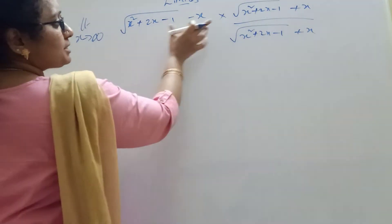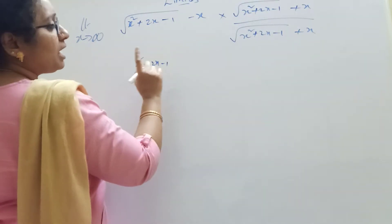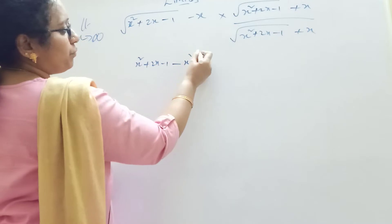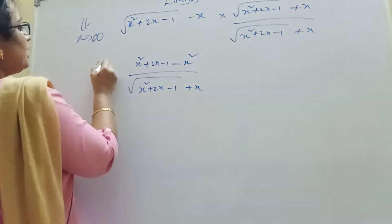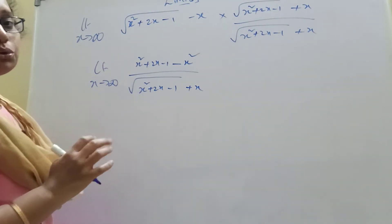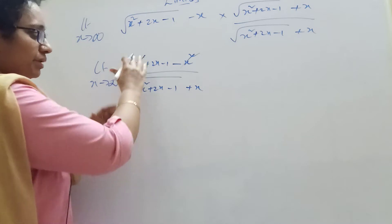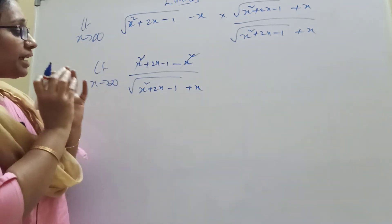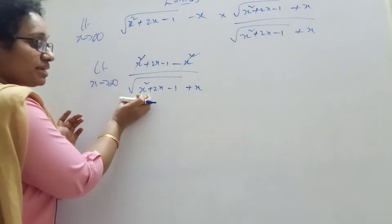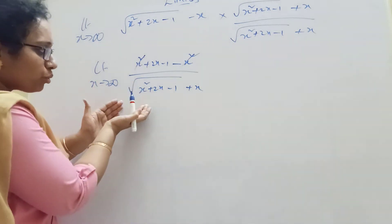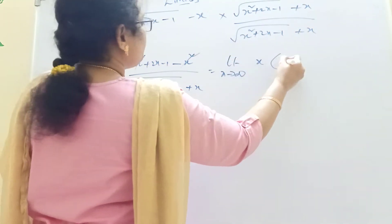We can get a plus b into a minus b — what is that? a square minus b square. And a is like x square plus 2x minus 1. a square minus b square minus x square — that is the numerator. The numerator: x square plus 2x minus 1 plus x is there. Limit x to infinity. If you recall the root problem, take it step by step. The power of x square is common. x is there — the numerator common. Down here x square is there, that is why x square is common.